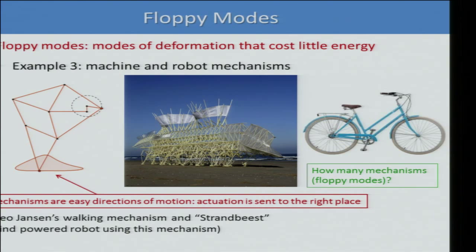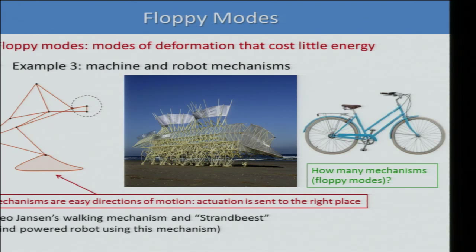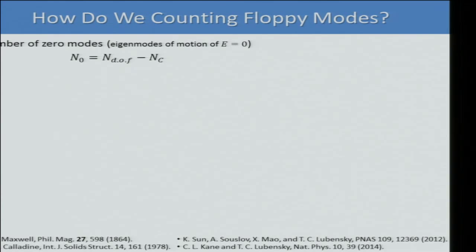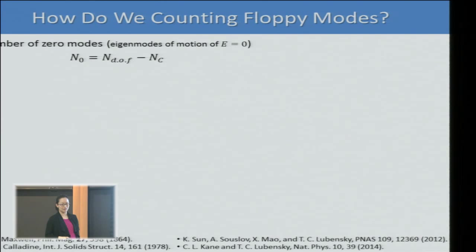For a small system you can just poke around and see how many mechanisms there are. But as physicists, we want to extract the rules. If I gave you a very large complex system, how can you tell how many floppy modes there are? This was first studied by Maxwell, who wrote down a simple equation: take the total number of degrees of freedom and subtract the number of constraints.